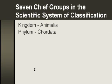Then the animal kingdom is subdivided into phylum. This would further break it down, and there are about 20 or more phyla. A mammal would be part of what's called Chordata.